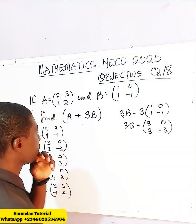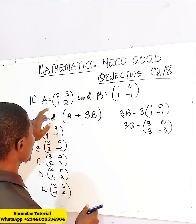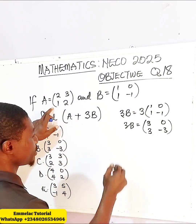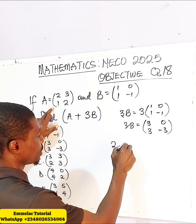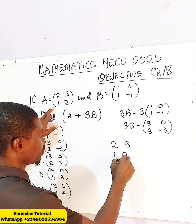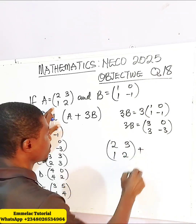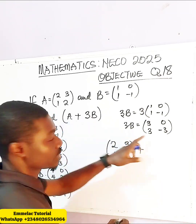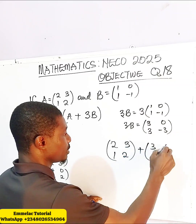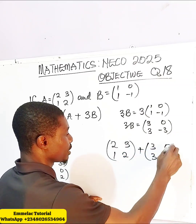So at this point, what do we do now? We now say, since A plus 3B, it will be the matrix 2, 3, 1, 2 plus 3B, which gives us 3, 0, 3, negative 3.